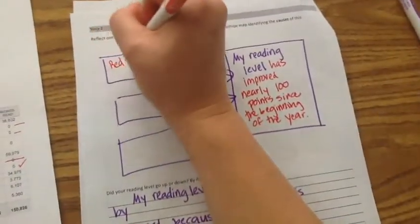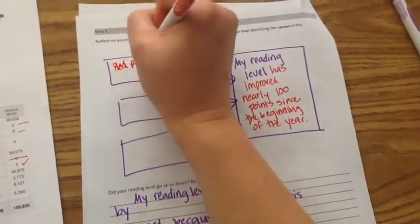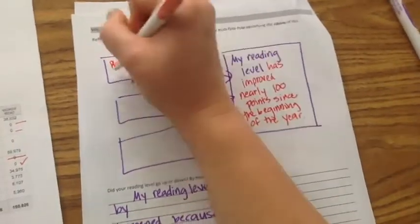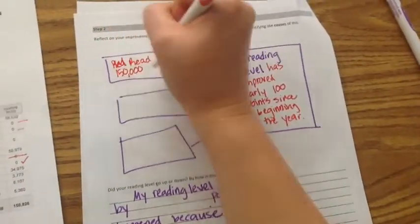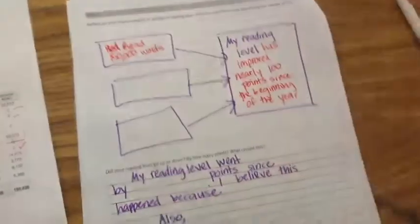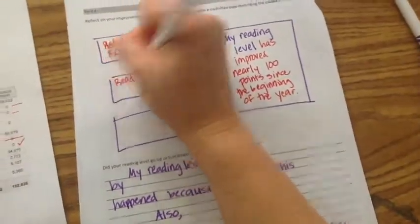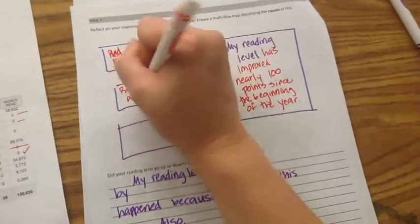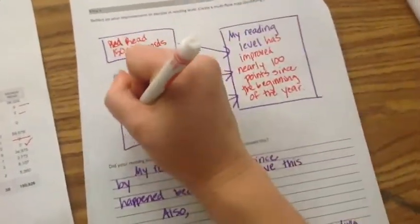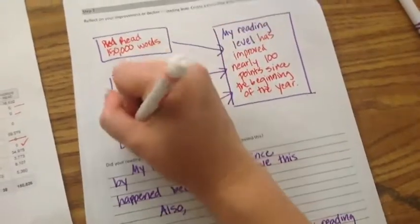And I'll say, I read 150,000 words, and I think that that helped me. So read 150,000 words. And that helped make my reading level go up. I think also I pretty consistently do my homework, so I read 15 minutes a day. And I'm always trying to focus very hard in class.